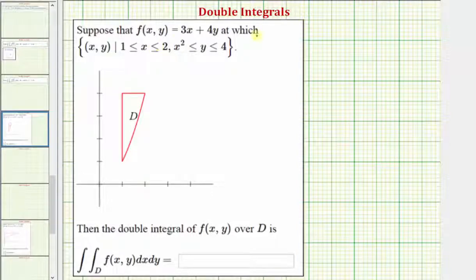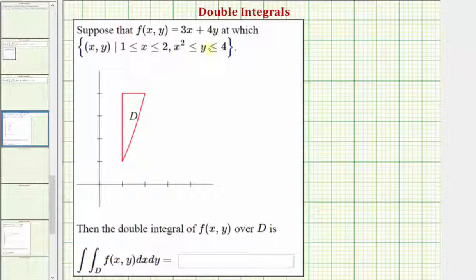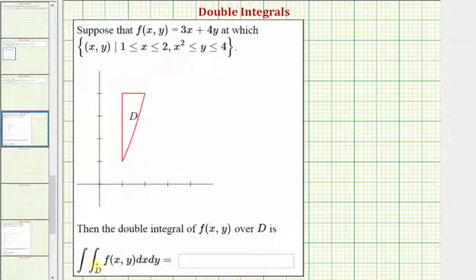We're going to consider the function f(x,y) over the region defined here, where x is greater than or equal to one and less than or equal to two, and y is greater than or equal to x squared and less than or equal to four. The region we're concerned about is graphed here on the x,y coordinate plane. We're asked to evaluate the double integral where we're integrating f(x,y) over the region D. Notice how they specify we want to integrate with respect to x first and then y. Let's first take a look at this in 3D.